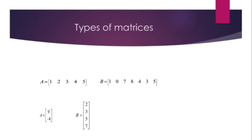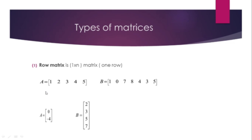Types of Matrices. First: Row matrix — a 1 by n matrix, meaning it has only 1 row. For example, if matrix A is [1, 2, 3, 4, 5], then A is called a row matrix.